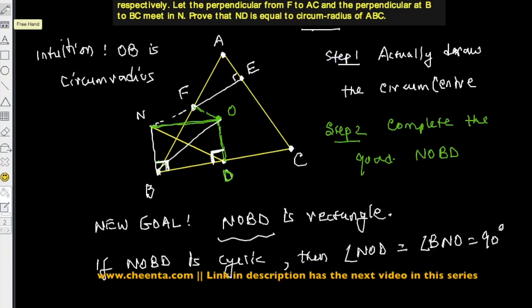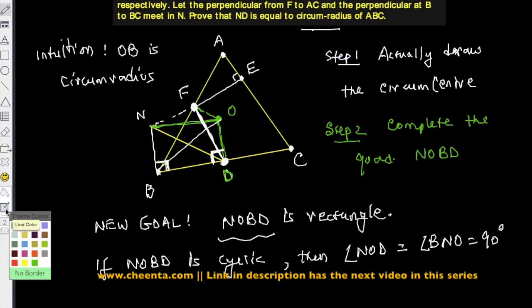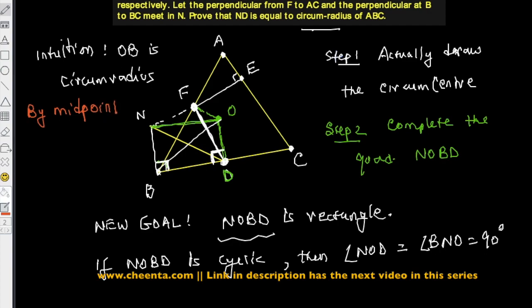To show this, we first join FD. Since F is the midpoint of AB and D is the midpoint of BC, by the midpoint theorem, FD is parallel to AC. If you are unfamiliar with the midpoint theorem, you can refer to the link in the description or look it up in your textbook.